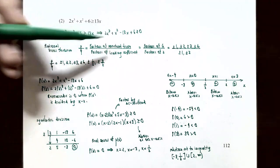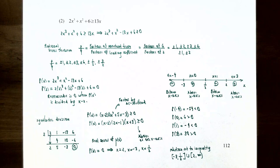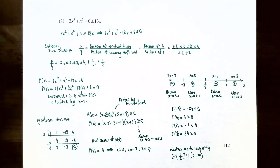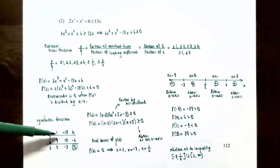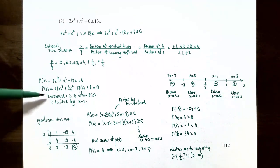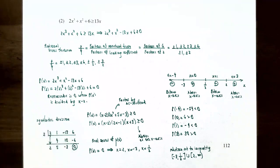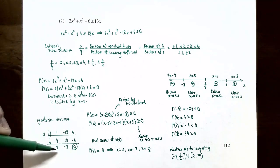Calling p(x) = 2x³ + x² − 13x + 6, testing x=2: p(2) = 2(8) + 4 − 26 + 6 = 0. So x−2 is a factor. Using synthetic division with coefficients 2, 1, −13, 6 and divisor 2: drop 2, multiply to get 4, add to get 5, multiply to get 10, add to get −3, multiply to get −6, remainder is 0. The quotient polynomial is 2x² + 5x − 3.